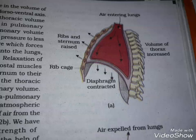Any change in the volume of the thoracic cavity will be reflected in the pulmonary cavity. Such an arrangement is essential for breathing as we cannot directly alter pulmonary volume. Respiration involves the following steps: breathing or pulmonary ventilation, by which atmospheric air is drawn in and CO2-rich alveolar air is released out; diffusion of gases (O2 and CO2) across the alveolar membrane; transport of gases by the blood; diffusion of O2 and CO2 between blood and tissues; and utilization of O2 by the cells in catabolic reactions with resultant release of CO2 — cellular respiration.